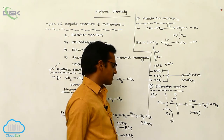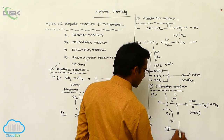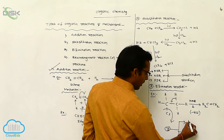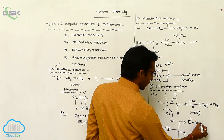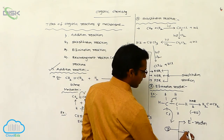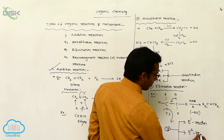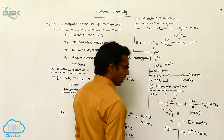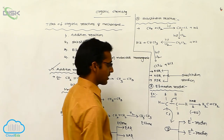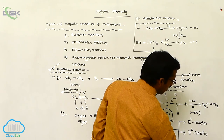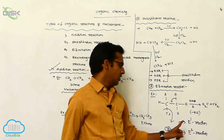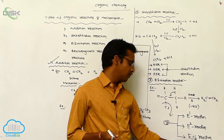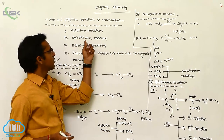Elimination reactions are classified into three types: E1 — unimolecular elimination reaction; E2 — bimolecular elimination reaction; and E1CB — conjugated base elimination reaction. These are your three types of addition, substitution, and elimination reactions.